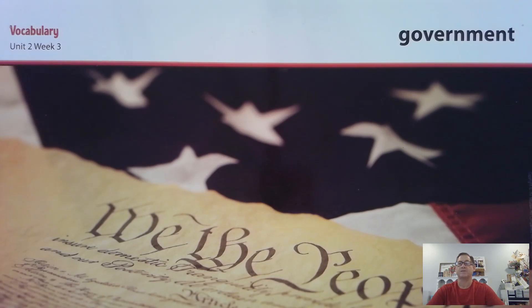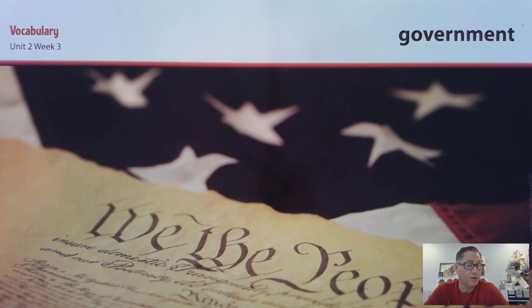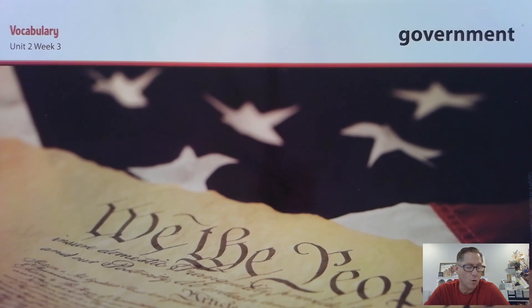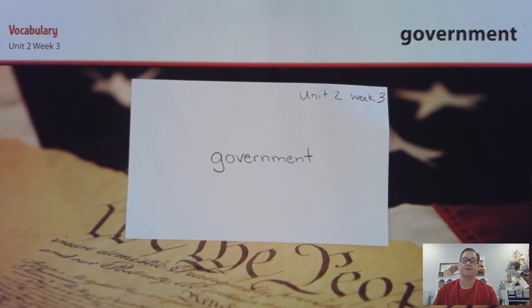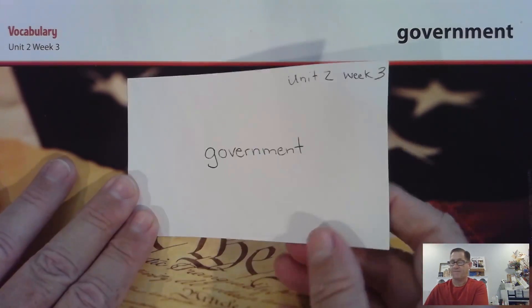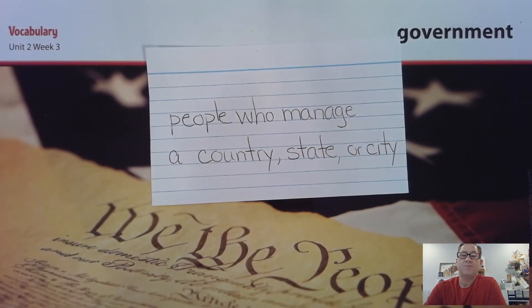The next word in the selection is Government. Say that word with me: Government. A government is the people who guide a city, state, or country. An example: our government makes laws. Think of one law our government has made. Write Government on one side of the card, and for the definition, write: the people who manage a country, state, or city.